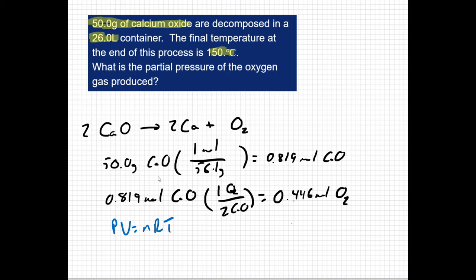I could say PV equals nRT. And just like the last question, if I'm solving for pressure, I could say pressure equals nRT over V. Now, we've got to be careful here. I've got a temperature that's at 150 degrees Celsius, so we want to convert that to 423 Kelvin. Otherwise, I should be good to go to use the ideal gas law.